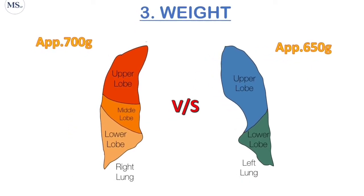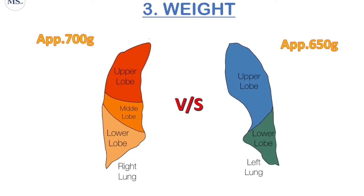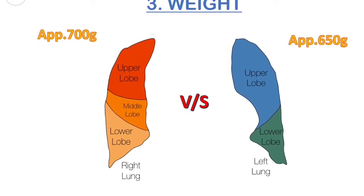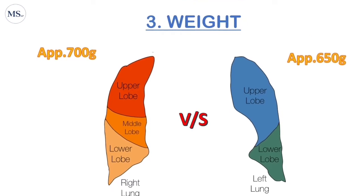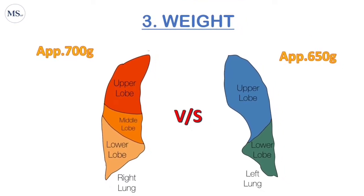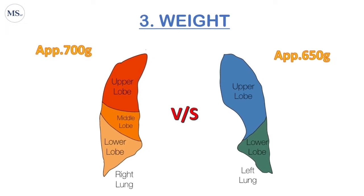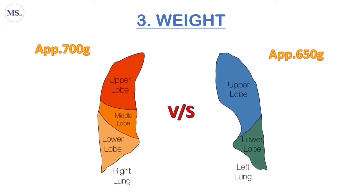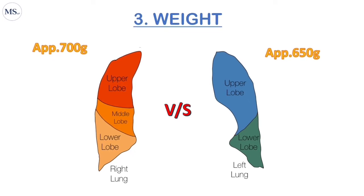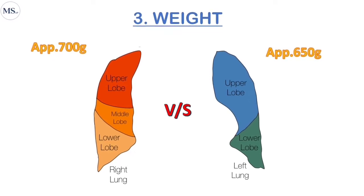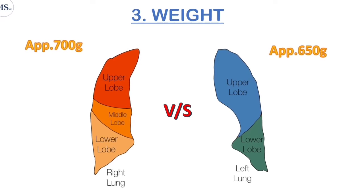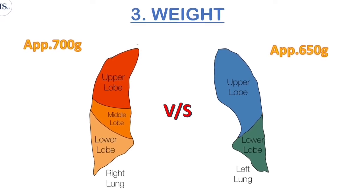The third difference is weight. Since the right lung is bigger than the left, which shares chest space with the heart, the weight of the right lung is approximately 700 grams in an adult human being. The weight of the left lung is approximately 650 grams. Together, the lungs weigh approximately 1.3 kilograms, and the right lung is heavier.